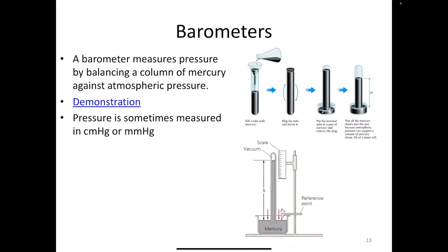Pressure can be measured using a device called a barometer. A barometer is any device that measures pressure. I'll talk about the mercury barometer, which is no longer used today but was the first device used to measure atmospheric pressure. To make one, all you need is a tube and a lot of mercury.